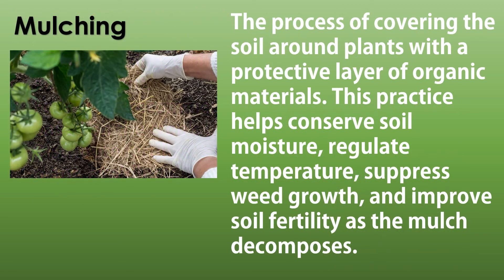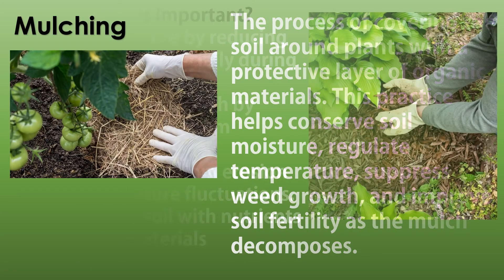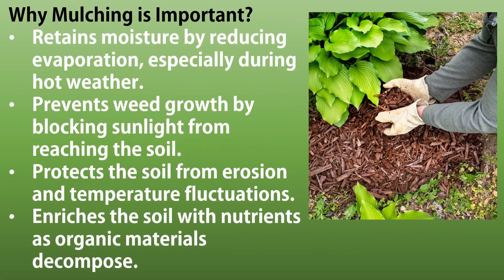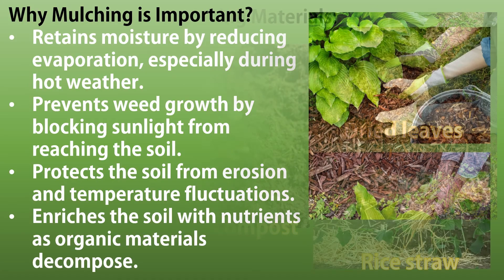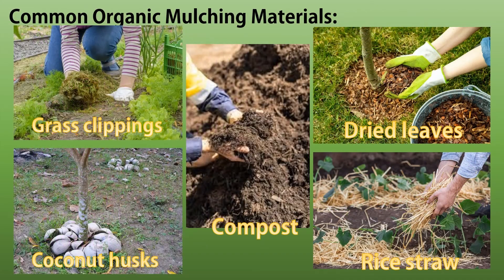Mulching is the process of covering the soil around plants with a protective layer of organic materials. This practice helps conserve soil moisture, regulate temperature, suppress weed growth, and improve soil fertility as the mulch decomposes. Various mulching materials are used in crop production, including grass clippings, coconut husks, compost, dried leaves, and rice straw. Selecting the right mulching material depends on the crop's needs, the availability of materials, and environmental considerations.